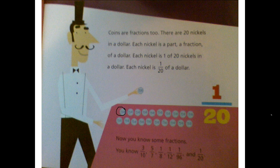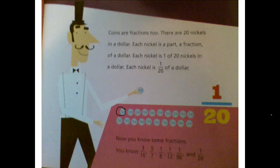Now you know some fractions. You know three-tenths like the balloons, five-sevenths like the kids sitting in the musical chairs, one-eighth like the pizza, one-twelfth like the cake, one-ninety-sixth like the pages of a book, and one-twentieth like money.